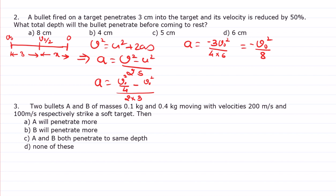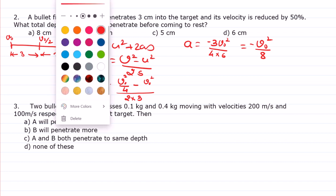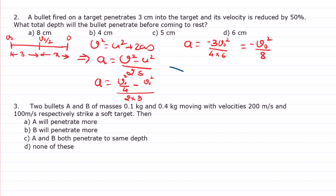Okay, so for the second case, the final velocity is 0, 0 minus v naught² by 4, divided by 4, divided by v naught² upon 8, 2 means it is also v naught² by 2, so